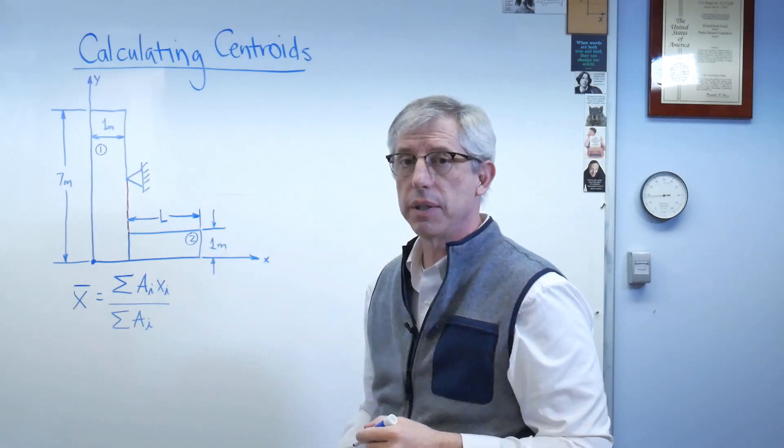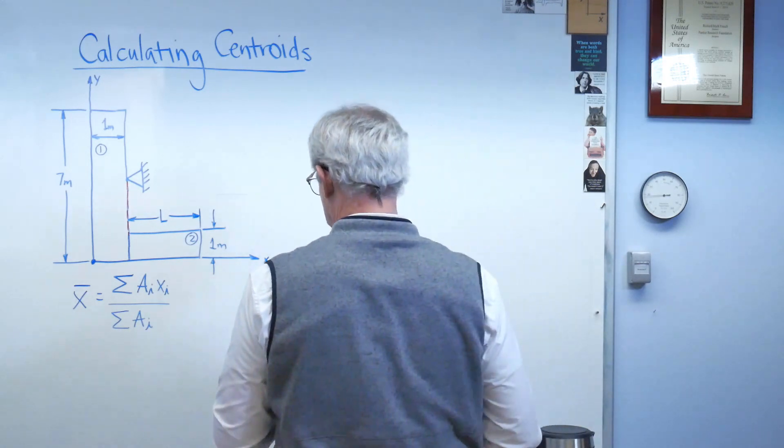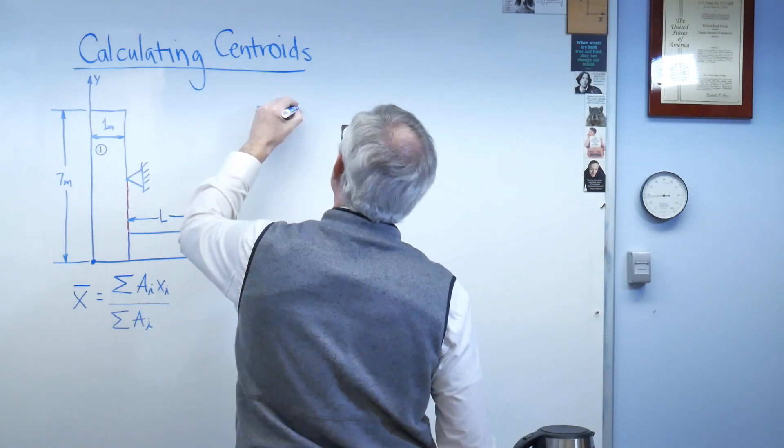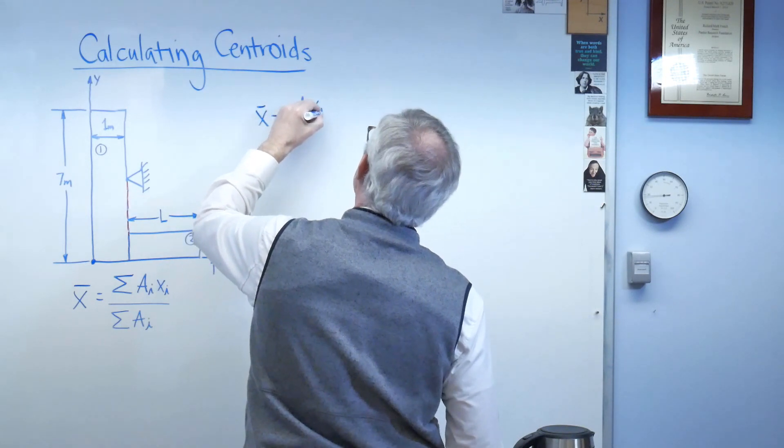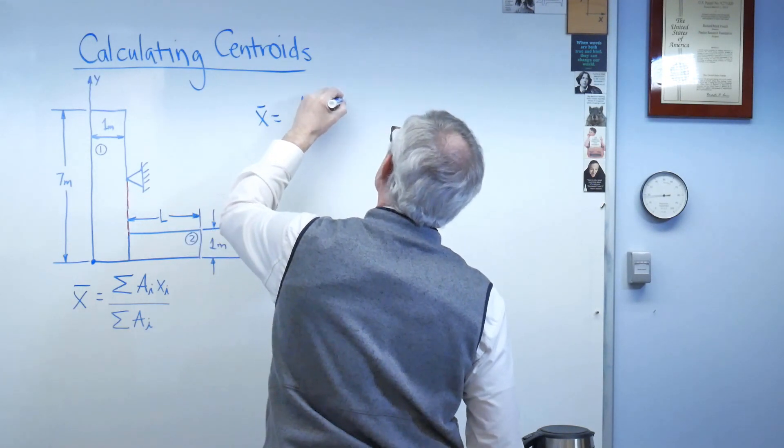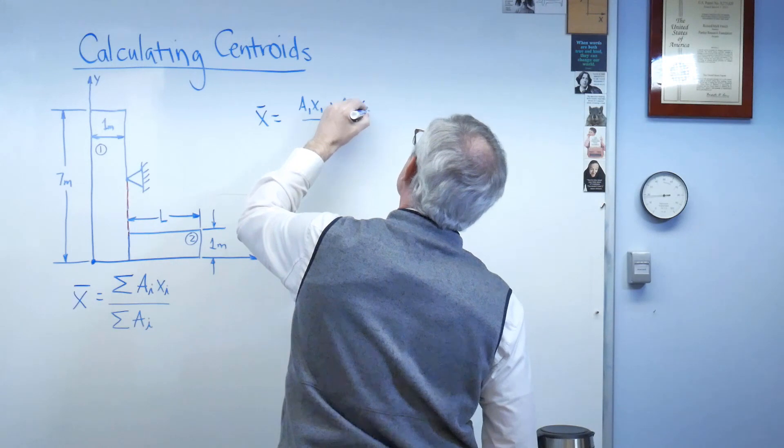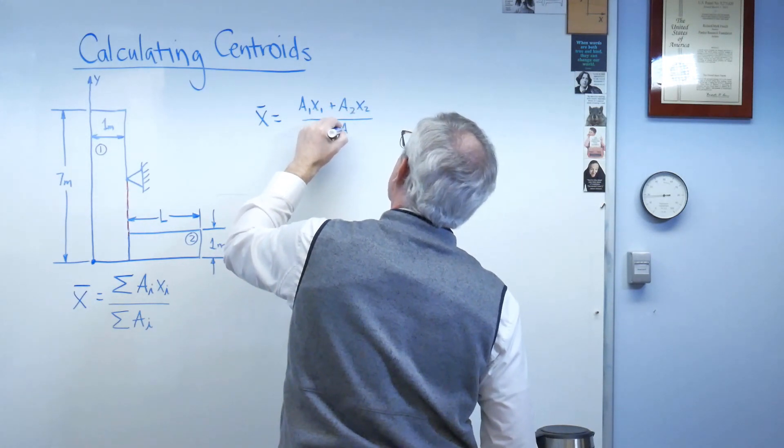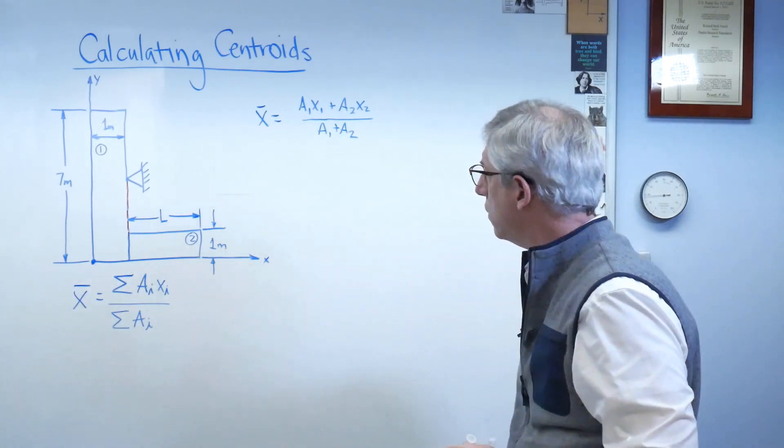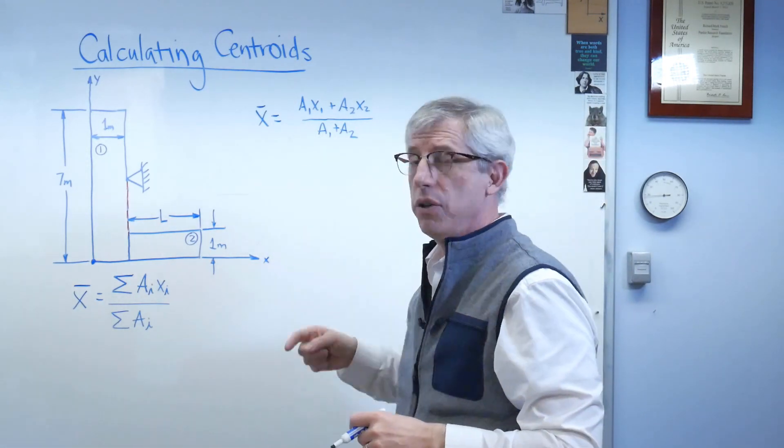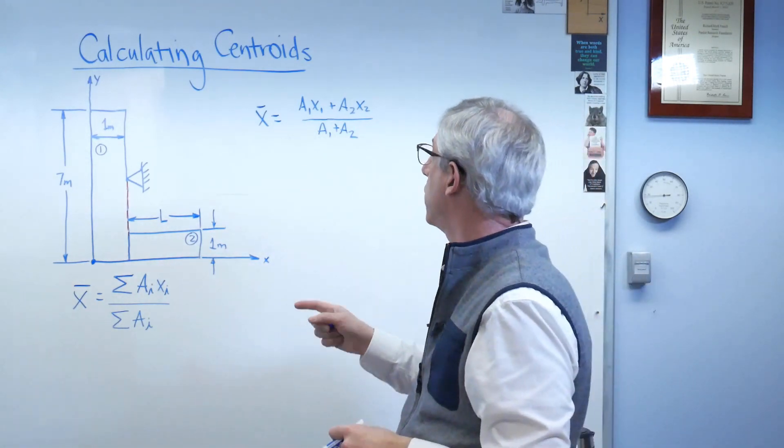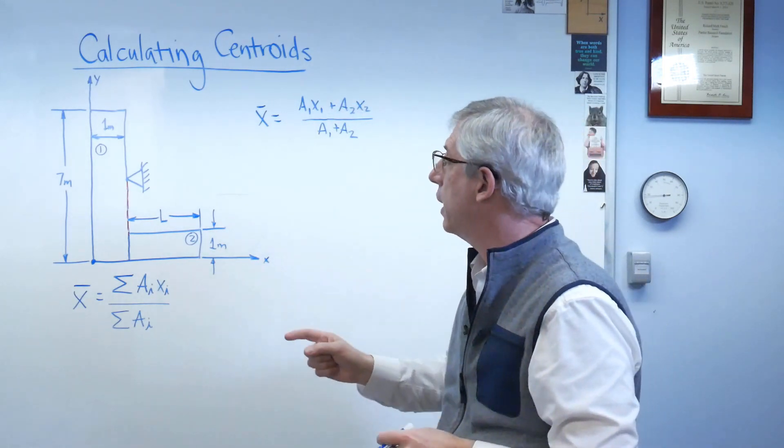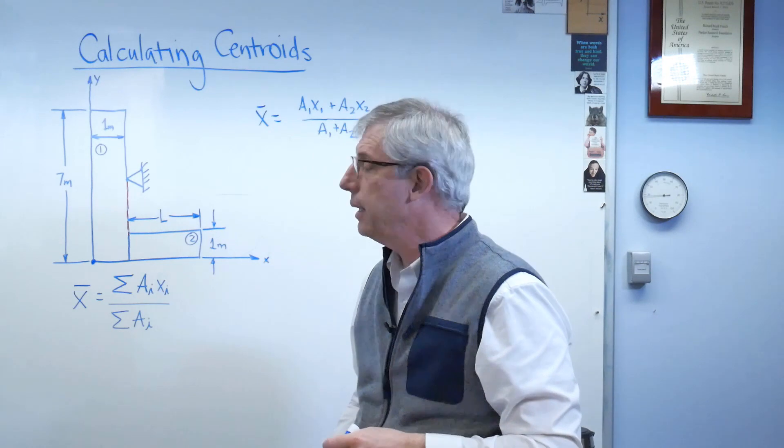So let's go up here. Let's expand this out now. So x-bar is a1x1 plus a2x2 over a1 plus a2. Okay, where a1 and a2, those are the areas of box 1 and box 2, and x1 and x2 are the x-centroid locations of these two boxes.